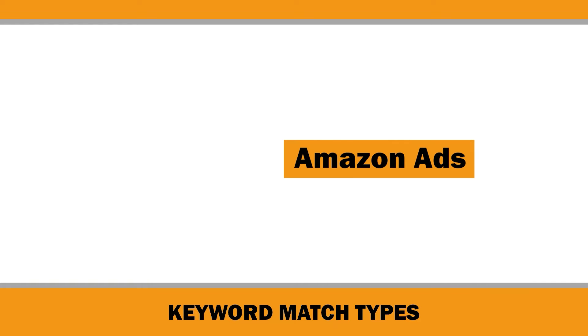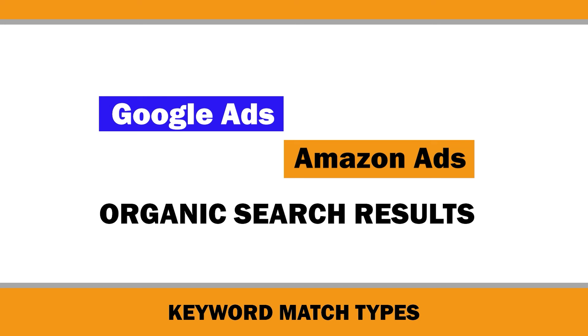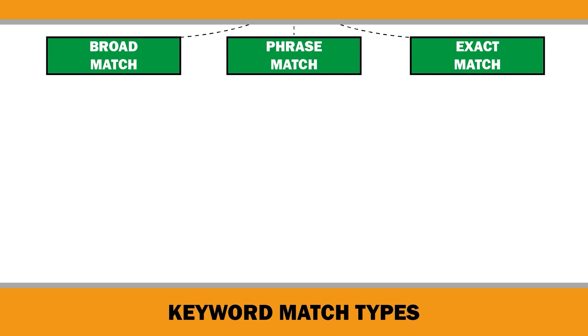Let's also talk about keyword match types. While many people think that keyword match types are only related to ad campaigns on Amazon or Google, what most people don't realize is that the keyword match types you use in your title or subtitle have a bearing on the organic search results you achieve. That's why I would like to define each match type to help you better understand the logic of search engines. The three keyword match types are broad, phrase, and exact.